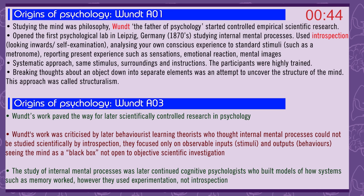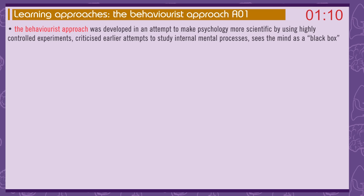Wundt's work was criticised by later behaviourists, who thought internal mental processes could not be studied scientifically by introspection. They focused only on observable inputs — stimuli — and outputs — behaviours — seeing the mind as a black box not open to scientific investigation. The study of internal mental processes was later continued by cognitive psychologists, who built models of how systems such as memory worked, using experimentation and inference rather than introspection.